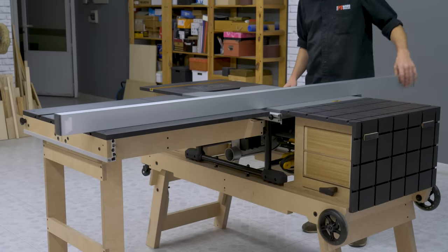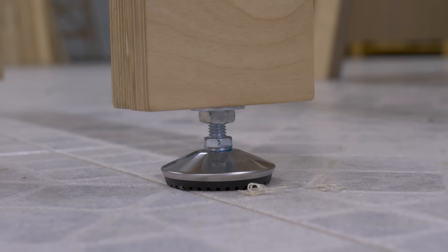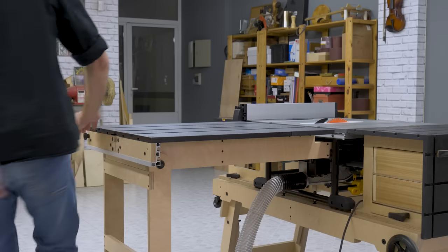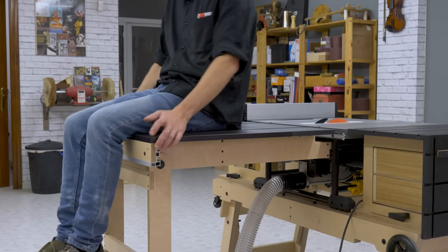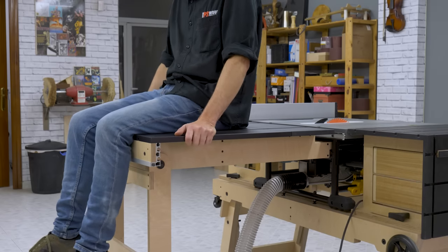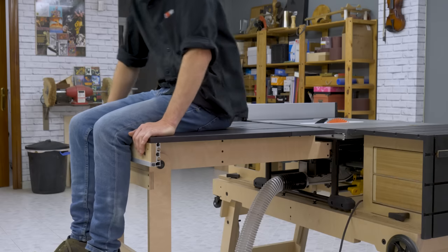Leveling the outfeed table and the table saw is quite easy, thanks to the two knobs and the two leveling feet I've installed on the outfeed table itself. Once it's leveled, the table can perfectly hold around 80 kg.